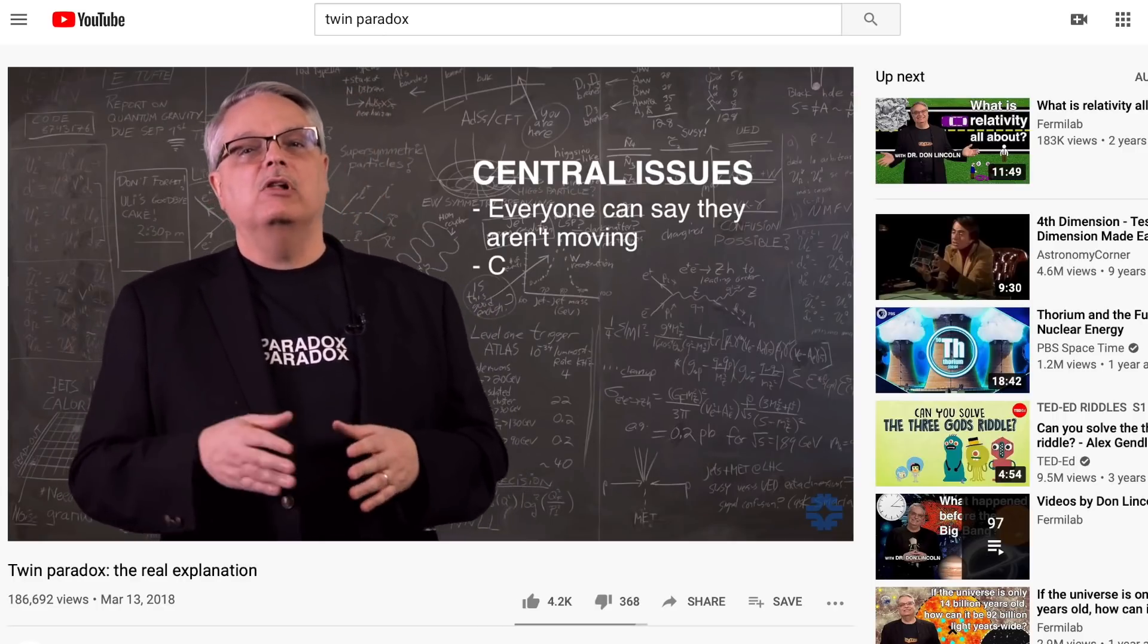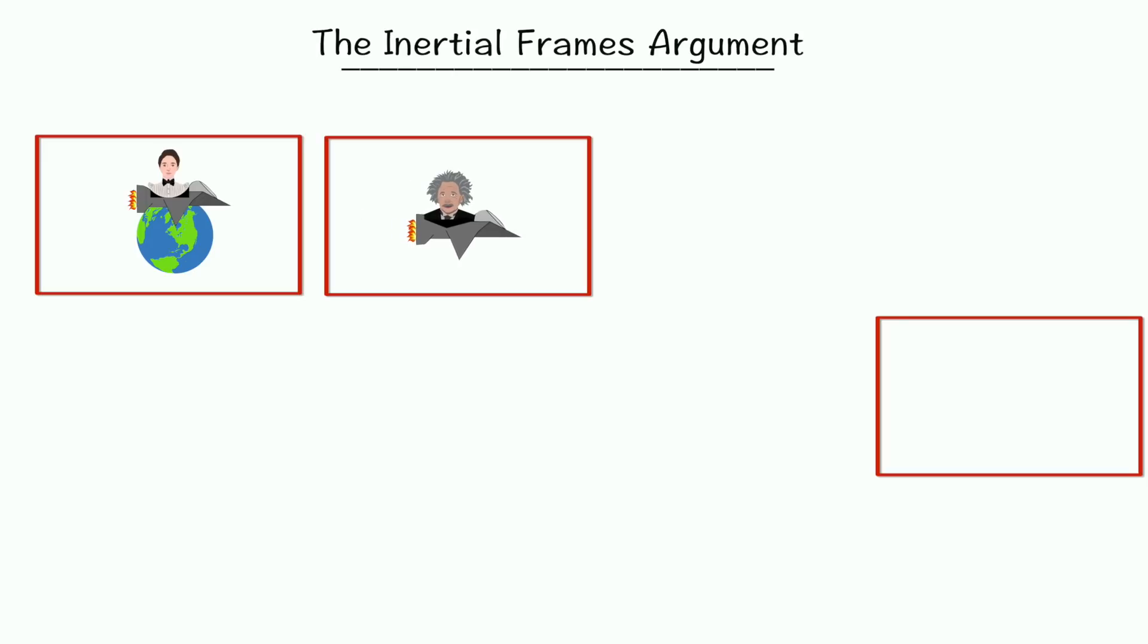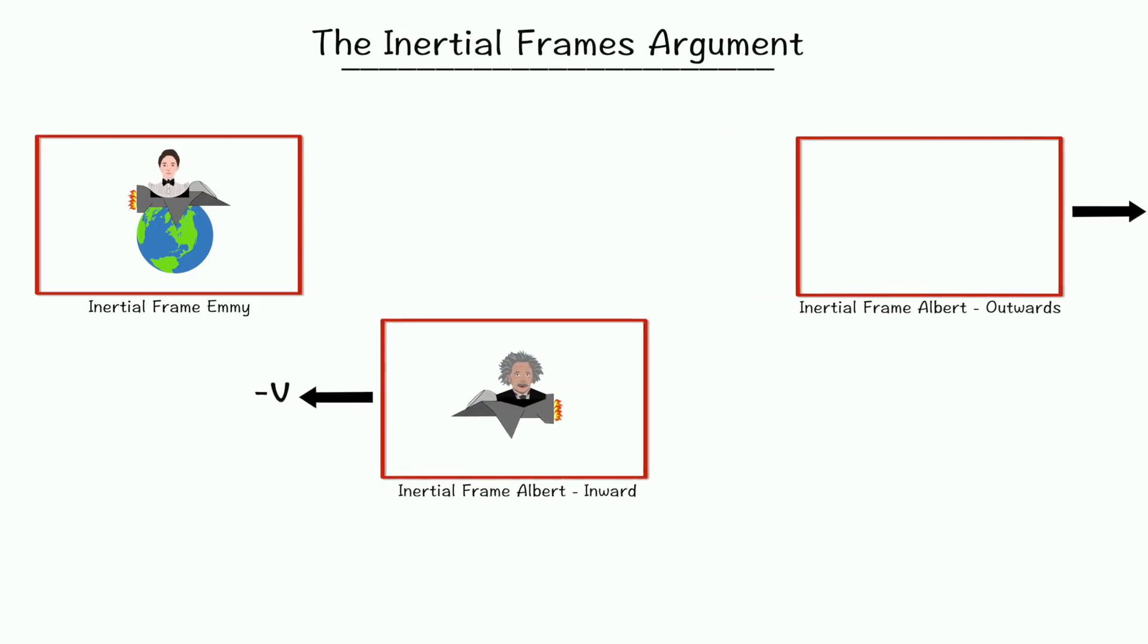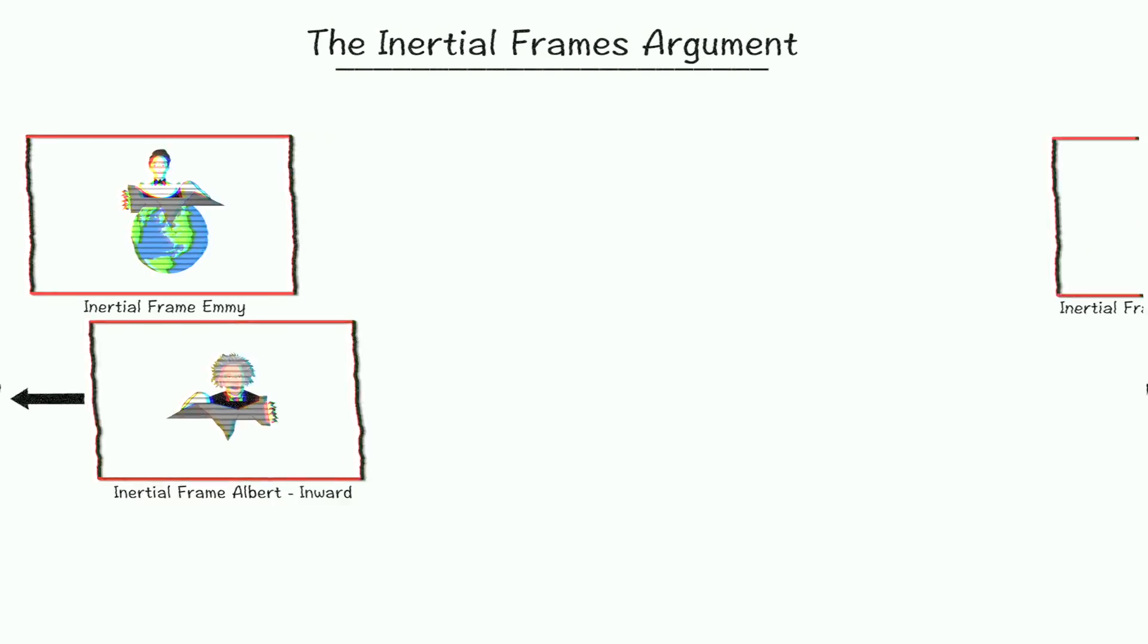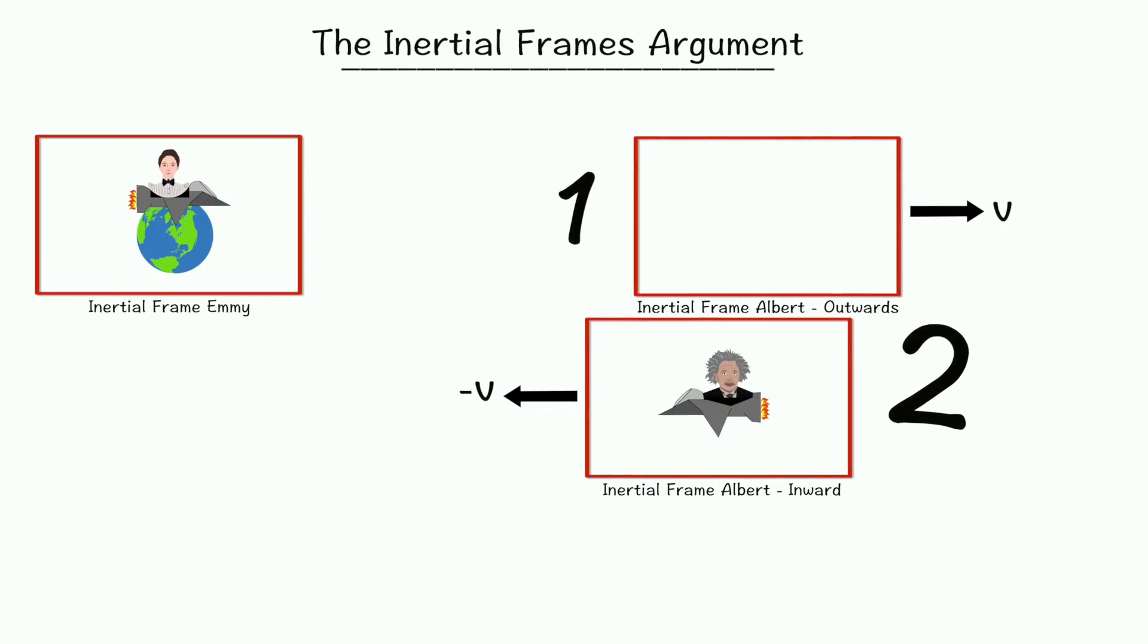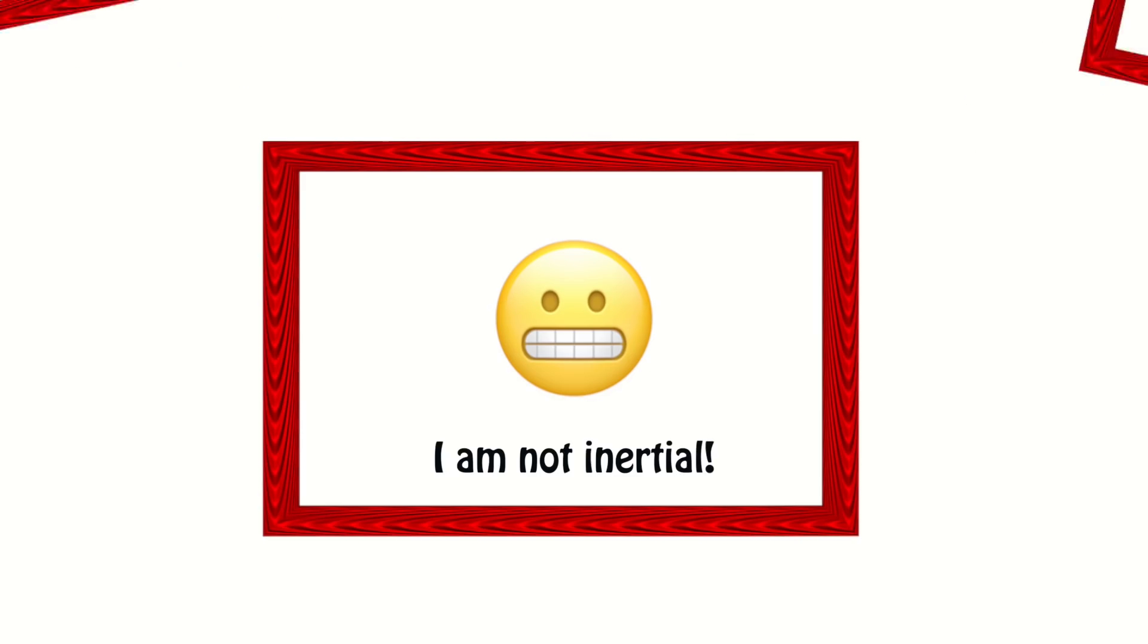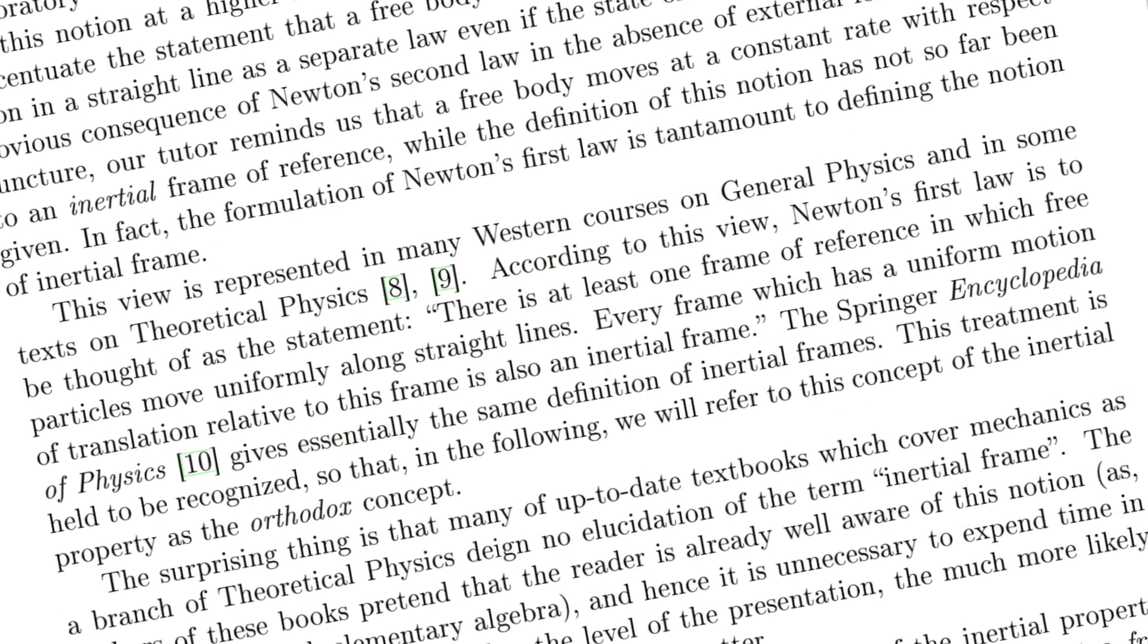The claim made by Fermilab's video, as well as other proponents of the inertial frames resolution, is that the symmetry of the twin paradox is broken not by acceleration, but by the fact that, over the course of the twins' separate journeys, one twin occupies only one inertial frame, while the other twin occupies two. Another way of saying this is that, at some point during the journey, one of the twins inhabits a non-inertial frame. But what do such statements even mean? What does it mean to occupy an inertial frame, or one of them versus two of them, or one of them versus a non-inertial frame? What even defines an inertial frame?